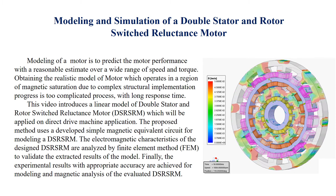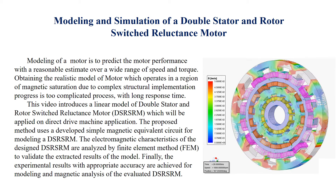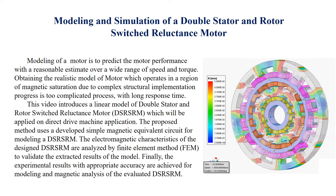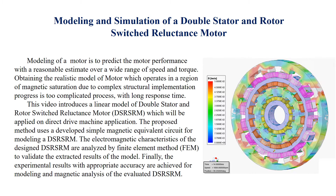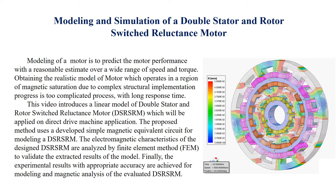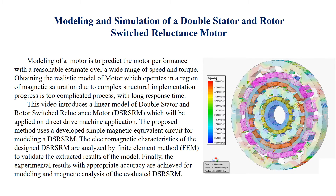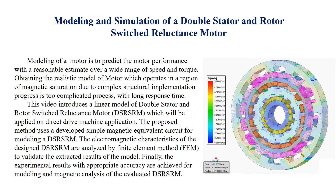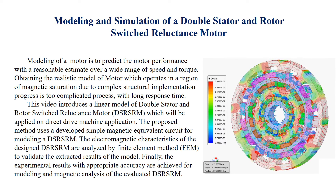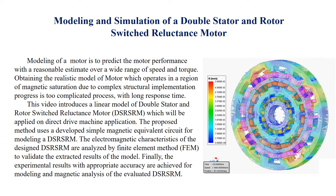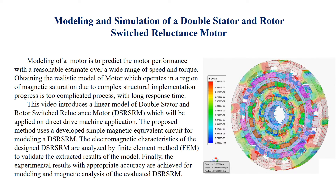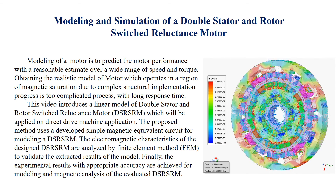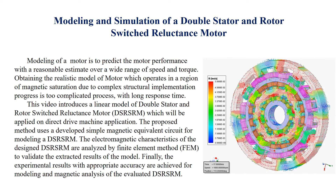The proposed method uses a developed simple magnetic equivalent circuit for modeling a double stator and rotor-switched reluctance motor. The electromagnetic characteristics of the designed double stator and rotor-switched reluctance motor are analyzed by finite element method to validate the extracted results of the model. Finally, the experimental results with appropriate accuracy are achieved for modeling and magnetic analysis of the evaluated double stator and rotor-switched reluctance motor.